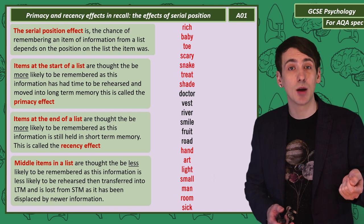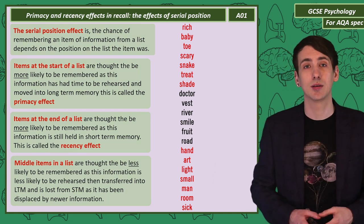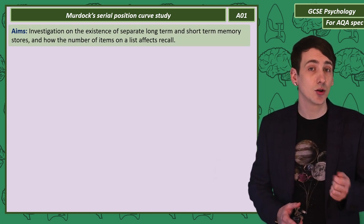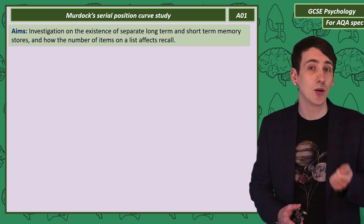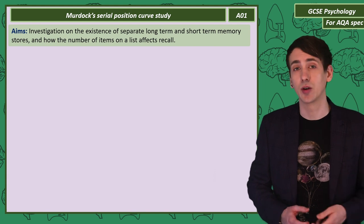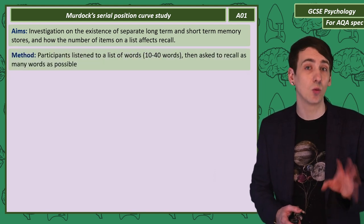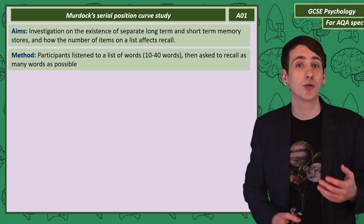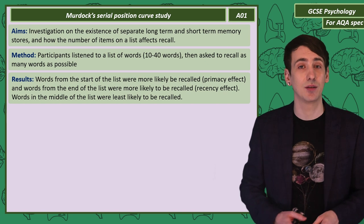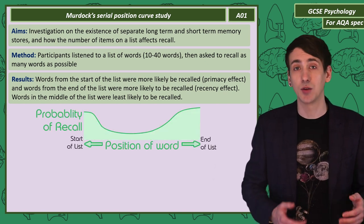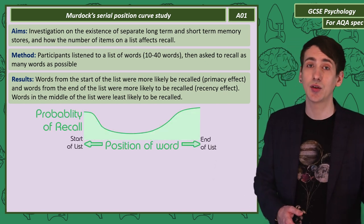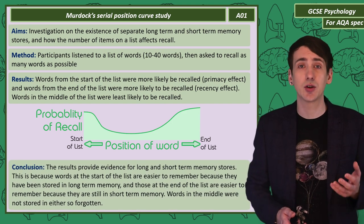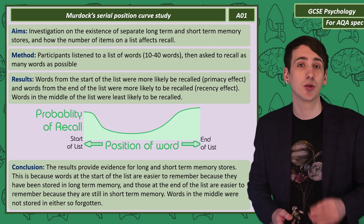A researcher called Murdoch conducted a study similar to this, aiming to investigate short-term memory stores and how the number of items on a list affects recall. Murdoch's method was to ask participants to listen to a word list and then record as many words as possible. Murdoch's results showed both the Primacy and the Recency Effect in recall — participants were more likely to recall words at the start or the end of the word list. Murdoch concluded that this showed evidence for both long-term and short-term memory stores.